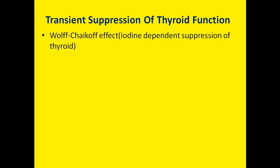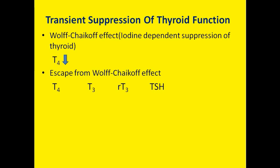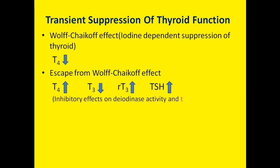Transient suppression occurs because of the Wolf-Chaikoff effect — that is, iodine-dependent suppression of thyroid function. These patients present with a decrease in T4 level after starting amiodarone. When amiodarone is used for a longer duration, the patient will escape from the Wolf-Chaikoff effect, and the following hormonal changes are seen: T4 starts to increase, rT3 increases, TSH increases, however T3 remains low.